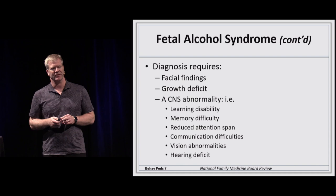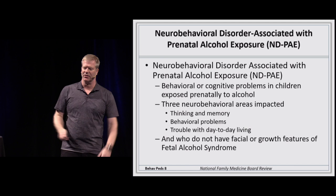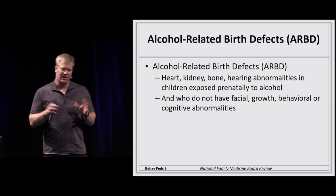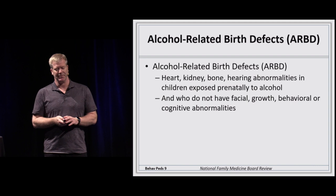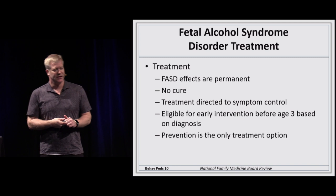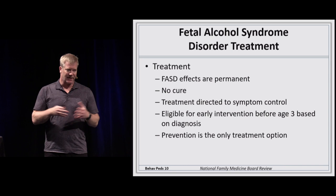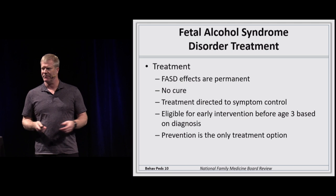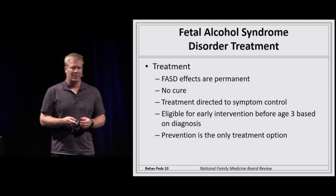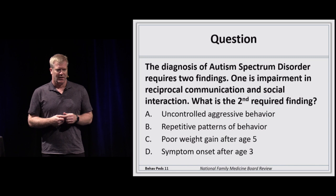The neurobehavioral presentation has the behavioral findings without the facial features. Alcohol-related birth defects can affect any organ but without facial or behavioral features. Treatment is primarily prevention — once someone has the condition, it's lifelong. Management involves behavioral therapies and various support structures, but prevention is the only definitive treatment.